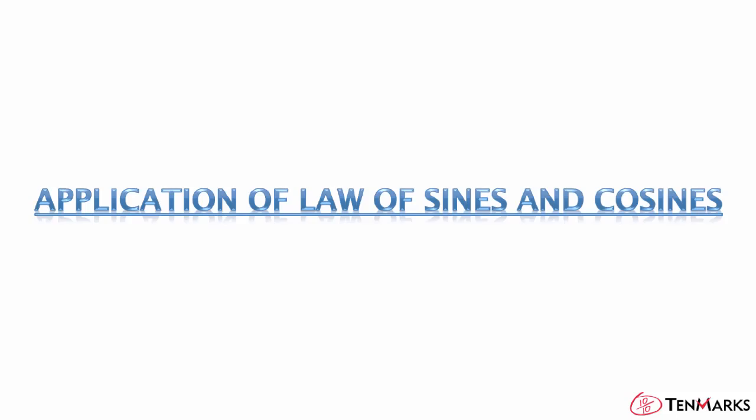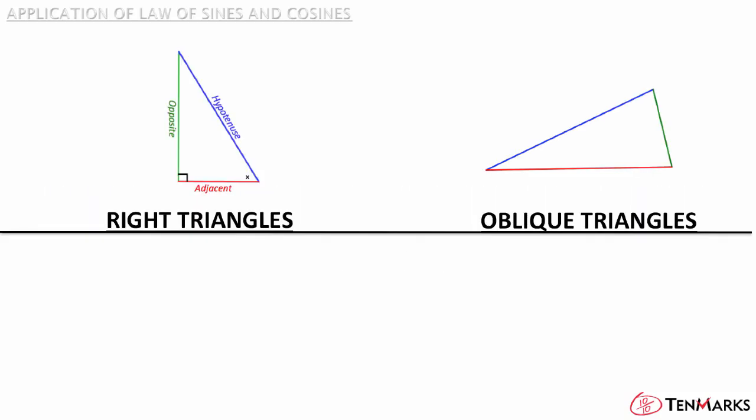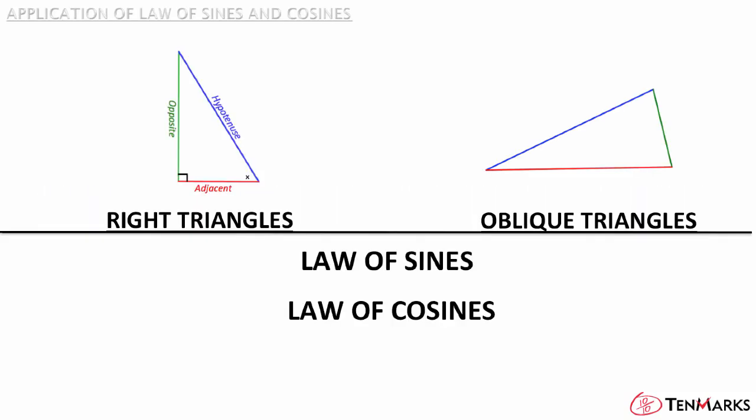This video will show you how to use the Law of Sines and Cosines to solve problems. The Law of Sines and the Law of Cosines can be used to solve for missing angles and sides of triangles. They work for both right triangles and oblique triangles. Oblique triangles are triangles that don't have a right angle.